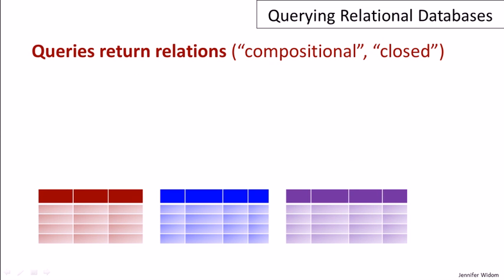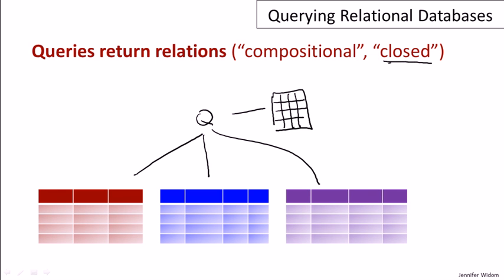In all relational query languages, when you ask a query over a set of relations, you get a relation as a result. So, let's run a query Q over these three relations we've shown here. And what we'll get back is another relation. When you get back the same type of object that you query, that's known as closure of a language. And it really is a nice feature.